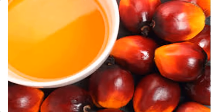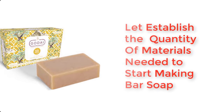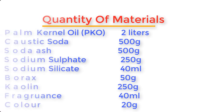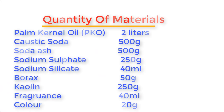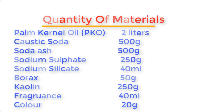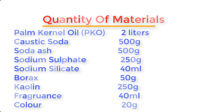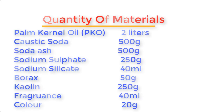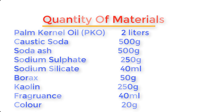Here are the quantities of materials needed to start production: palm kernel oil (PKO) — 2 liters; caustic soda — 500 grams; soda ash — 500 grams; sodium sulfate — 250 grams; sodium silicate — 40 ml; borax — 50 grams; kaolin — 250 grams; fragrance — 40 ml; and color — 20 grams.